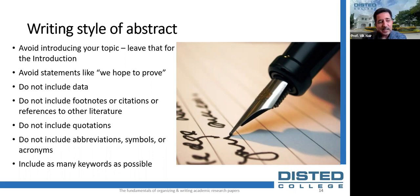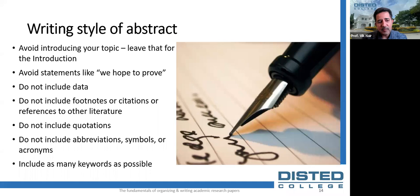Include as many keywords as possible — some journals allow only six indexed keywords while others allow more. The words in the title, abstract, and keywords are all key when locating the paper in databases. Let's now look at an example of an abstract to learn about the different areas of abstract writing.